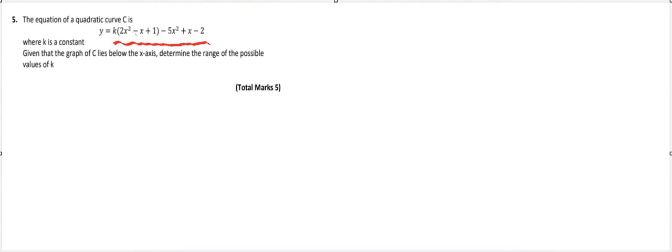The first thing we do is expand this first bracket, so y is equal to 2kx squared minus kx plus k, and then the last three terms minus 5x squared plus x minus 2.